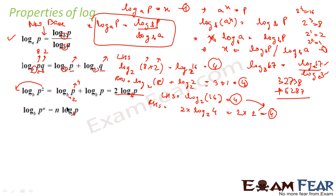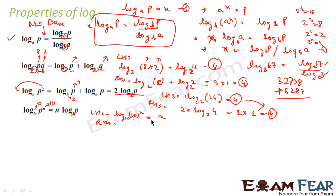Let's also verify with base 10 and p as 10. LHS is log 10 to the power n to the base 10, which equals n. RHS is n times log 10 to the base 10, which is n times 1, equals n. So LHS and RHS are equal.